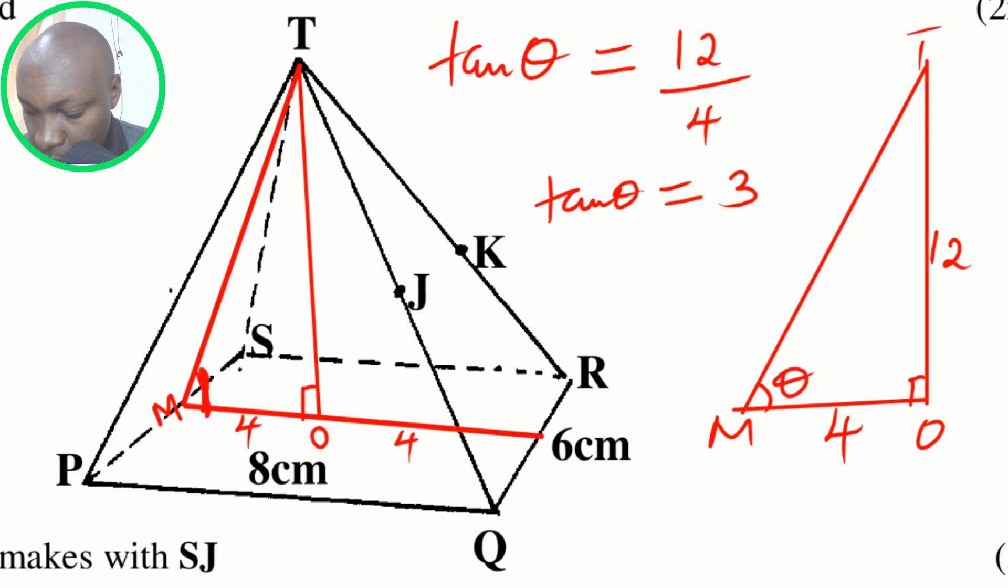When you get the tan inverse of 3, now the tan inverse of both sides - tan inverse of tan theta is theta. Tan inverse of 3 using a calculator, this one is going to give 71.57.